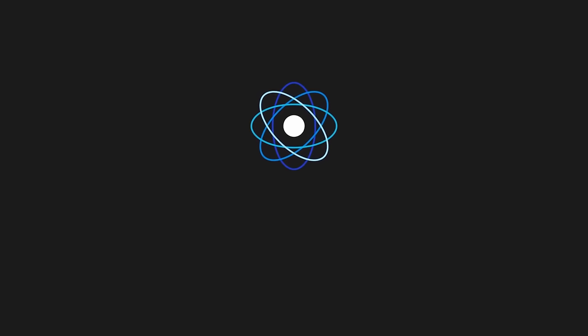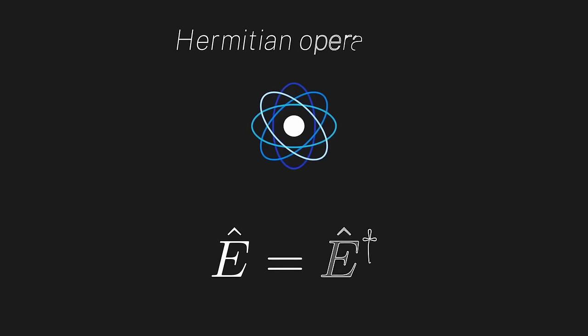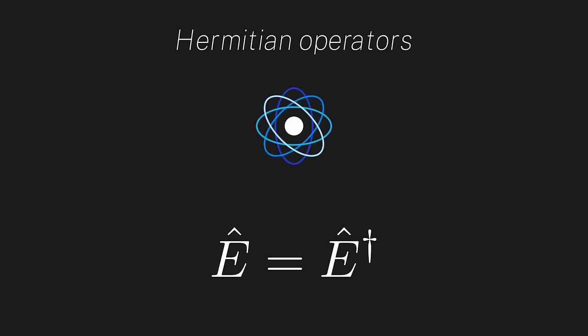Hey everyone, in the last couple of episodes we've been working with observables and their representations as linear operators within our vector space. In this episode, I want to introduce Hermitian operators and show you how they connect to our physical observables. As a heads up, make sure you've watched chapter 7 on observables, since we will be using results derived in that chapter.